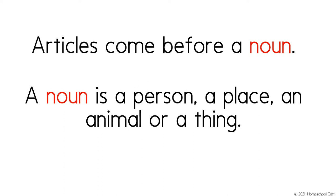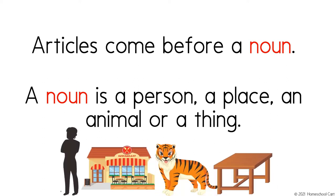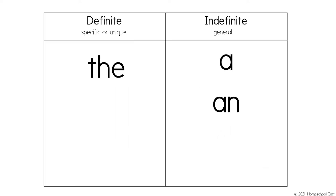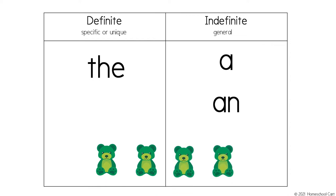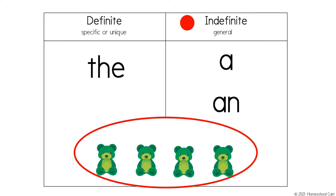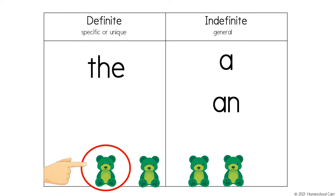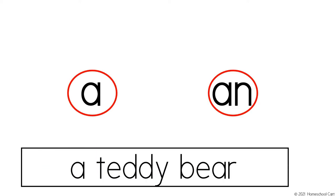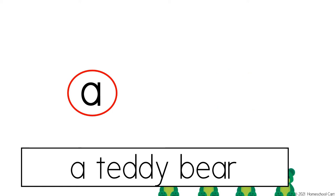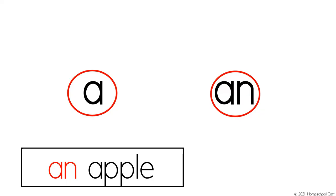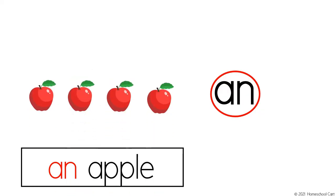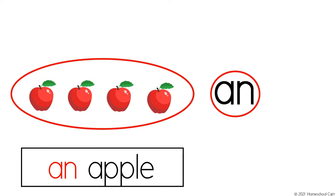That was a lot. Let's review what we've learned. An article comes before a noun. A noun is a person, a place, an animal, or a thing. The indefinite articles, a or an, refer to a general thing. The definite article, the, refers to a specific or a particular thing. Let's focus on indefinite articles. Would you use a or an? We use a. How about now? We use an whenever you have a word that begins with a vowel.